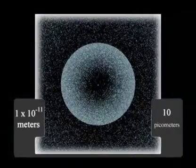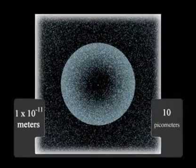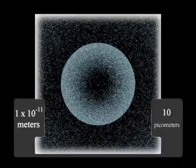Going in another factor of 10 to 10 to the minus 11 meters, or 10 picometers, as they're called, you can see the inner cloud of electrons.